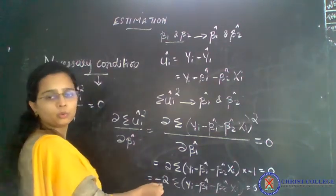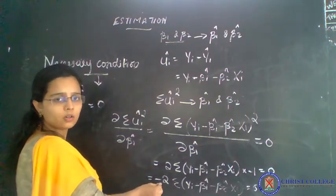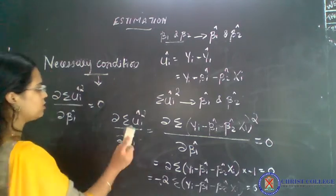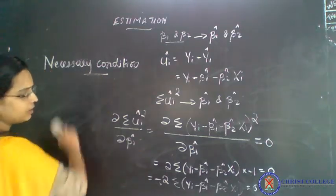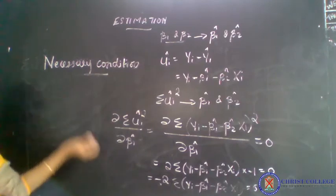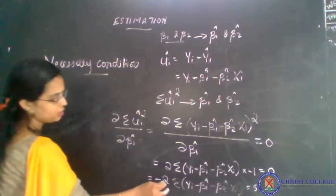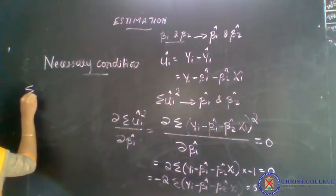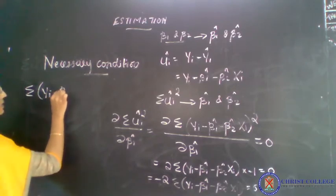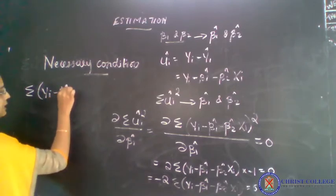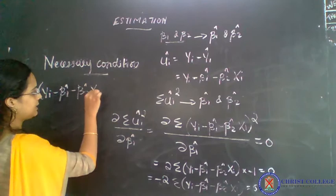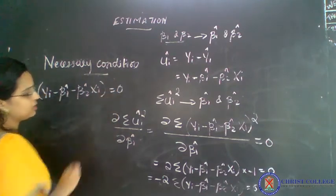We know that minus 2 is a constant term and will not equal 0. So we can ignore this minus 2 component and take sigma (y_i minus beta 1 hat minus beta 2 hat x_i) equal to 0.